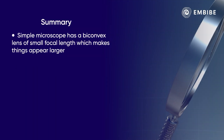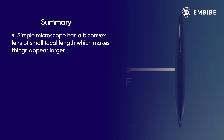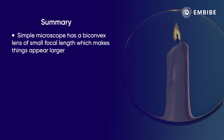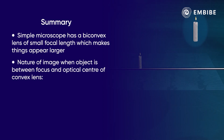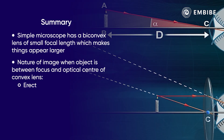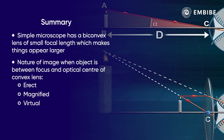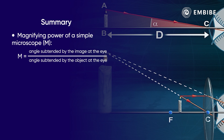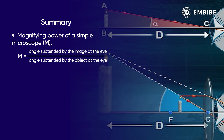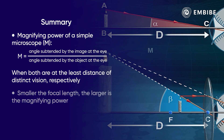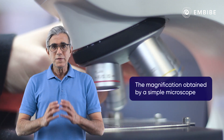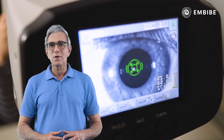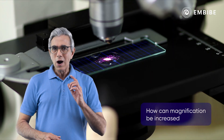To summarize: a simple microscope consists of a biconvex lens of small focal length which makes things appear larger. When an object is placed between the focus and the optical center of a convex lens, the image formed is erect, magnified, and virtual. The magnifying power is given by the ratio of the angle subtended by the image at the eye to the angle subtended by the object at the eye, when both are at the least distance of distinct vision. The smaller the focal length, the larger is the magnifying power. The magnification obtained by a simple microscope is quite small and cannot increase beyond a certain limit — so how can magnification be increased?